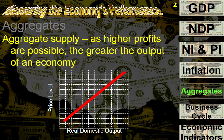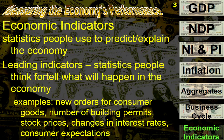As we're talking about aggregate demand and aggregate supply, a lot of this is kind of taking a guess of what's going to happen based on what we call economic indicators. These are statistics used primarily by economists to explain what's going on in the economy or what will happen in the economy.